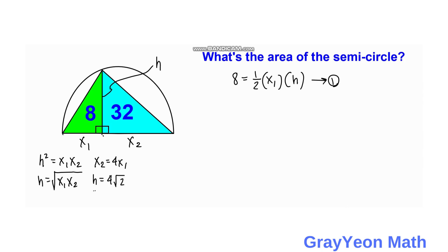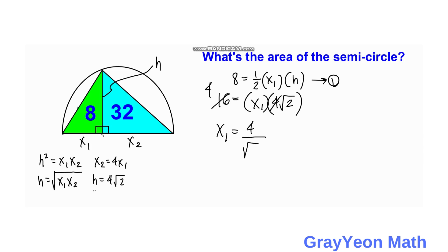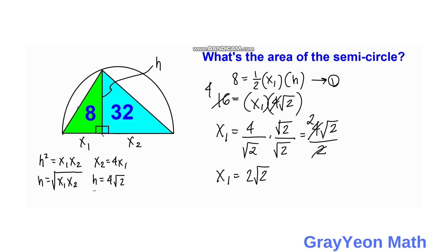Using equation 1: 8 times 2 equals 16 after cross-multiplying. With h equal to 4 square root of 2, we solve for x1. Multiplying through and dividing by 4 square root of 2, x1 equals 4 over square root of 2. Rationalizing by multiplying by square root of 2 over square root of 2 gives 4 square root of 2 over 2, which simplifies to x1 equals 2 square root of 2 units.